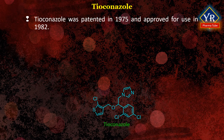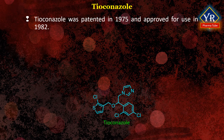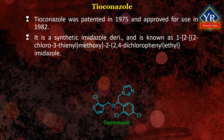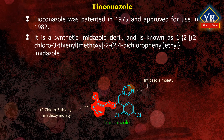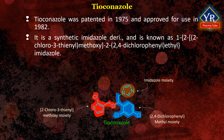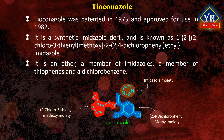The next drug is Tioconazole. Tioconazole was patented in 1975 and approved for medical use in 1982. It is a synthetic imidazole derivative. Chemically, it is known as 1-[2-(2-chloro-3-thienylmethoxy)-2-(2,4-dichlorophenyl)ethyl]imidazole. It is a member of the class of imidazoles comprising 2-(2,4-dichlorophenyl)ethylimidazole carrying an additional 2-chloro-3-thienylmethoxy substituent at position 2. It is an ether, a member of imidazoles, a member of thiophenes, and a dichlorobenzene.